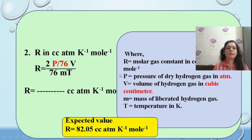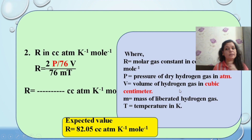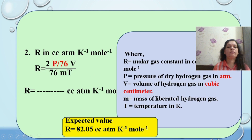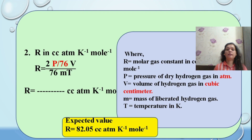To calculate R in cc·atmosphere per Kelvin per mole, again use the conversion P(atm) = P(cm) / 76. The equation becomes: R = 2 × P × V / (76 × m × T), where you can calculate R in cc·atm per Kelvin per mole.